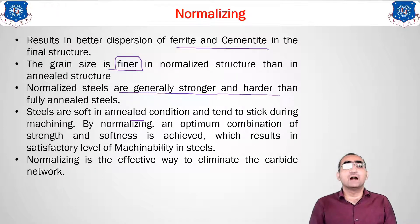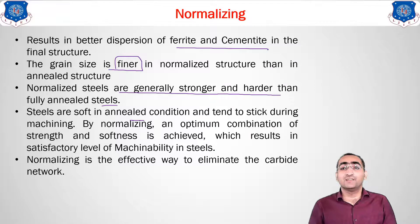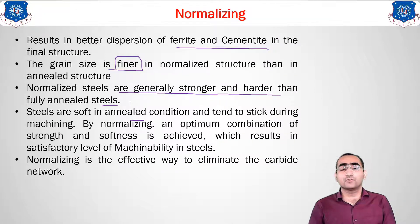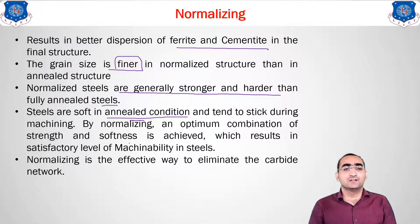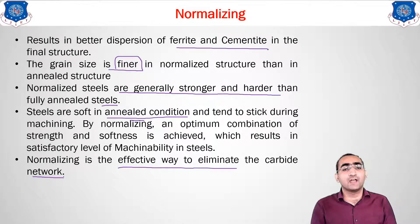Steels are generally stronger and harder after normalizing than after annealing. Previously we studied that annealing drastically decreases hardness and strength, while increasing machinability, ductility, and softness. In normalizing, the temperature is higher but cooling is faster, so the steels are of the stronger and harder type. Normalizing is also an effective way to eliminate the carbide network present in the material.